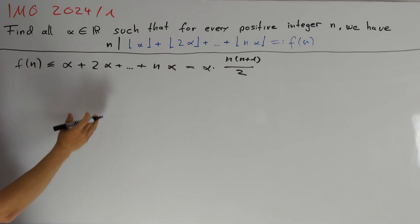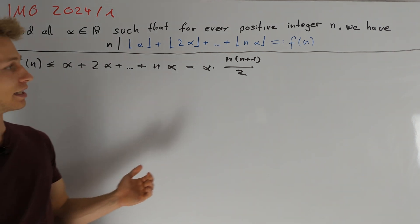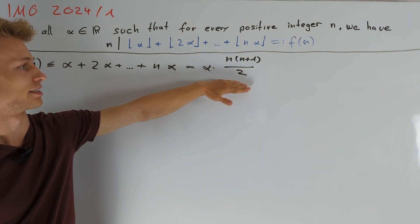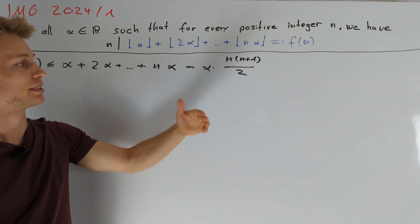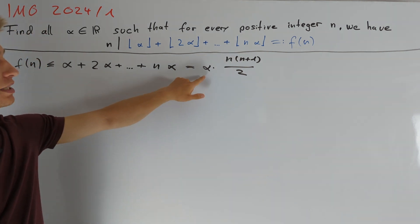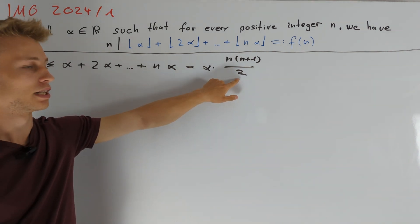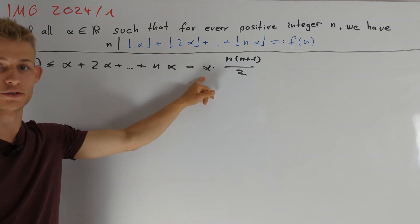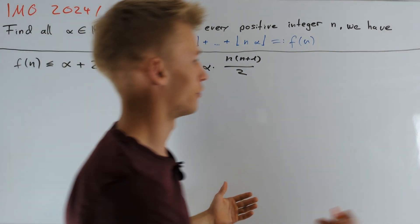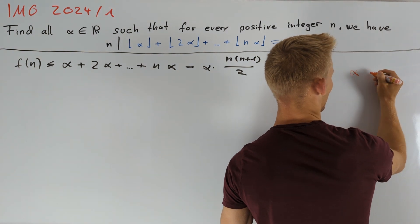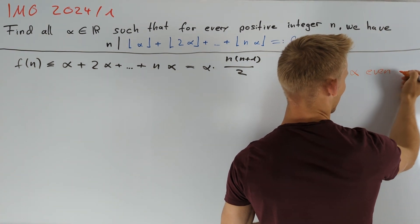Equality holds here if and only if alpha is an integer, and in this case we can consider this product on the right-hand side. We see that this product is divisible by n if alpha divided by 2 is an integer, so if alpha is a multiple of 2. So we can write down our first solutions for alpha: namely alpha even.